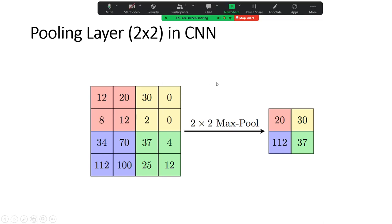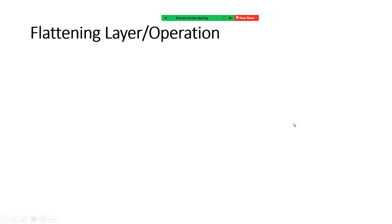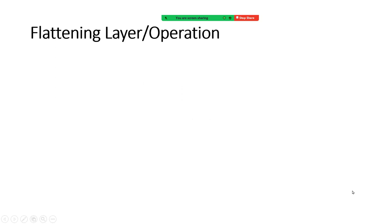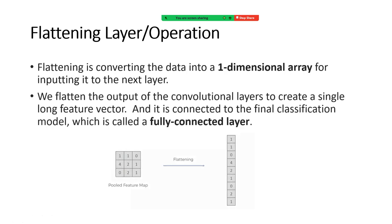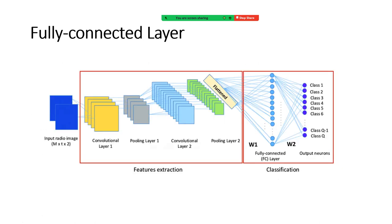The next step is flattening. We convert the feature map into a one-dimensional column vector so it can be fed into the fully connected deep neural network for classification. Here is the full architecture: input image, apply convolutional layer, pooling layer, second convolutional layer, pooling layer, then flattening, and finally the classification layer which performs the classification.